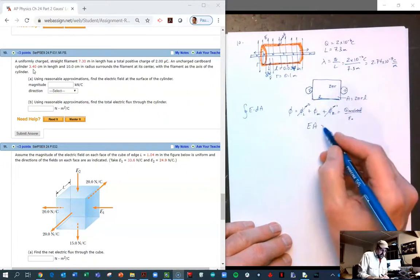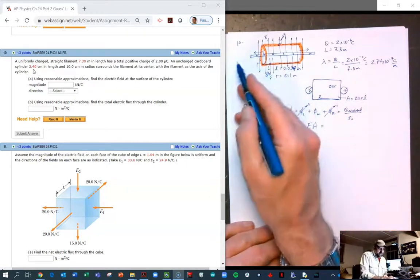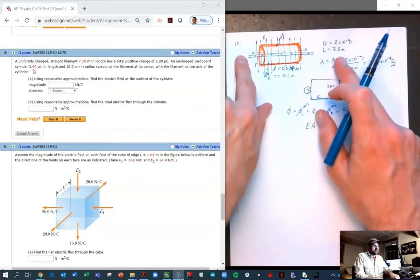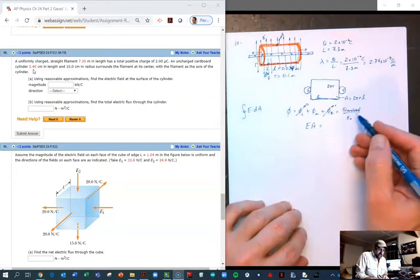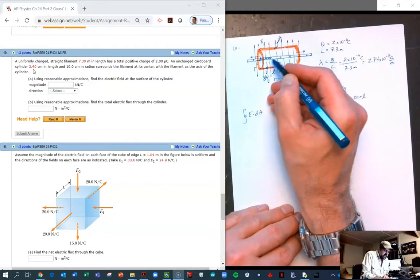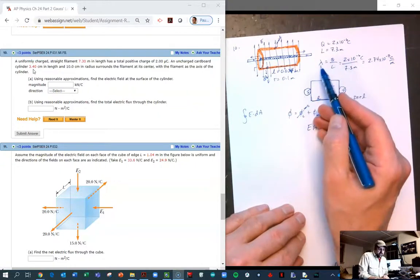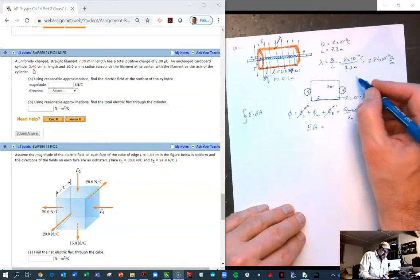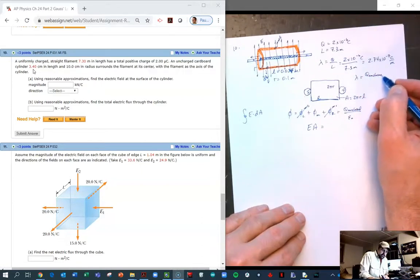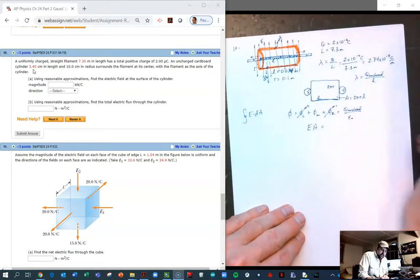This is equal to the charge enclosed. Now this is important to understand: this is not the charge of the entire rod. Remember, the entire rod goes infinitely long or 7.3 meters practically infinitely long. What we're looking at is the charge enclosed by the Gaussian, so all we care about is the charge here. Because the density is uniform, lambda equals the charge enclosed over that length, and that length is the script l.